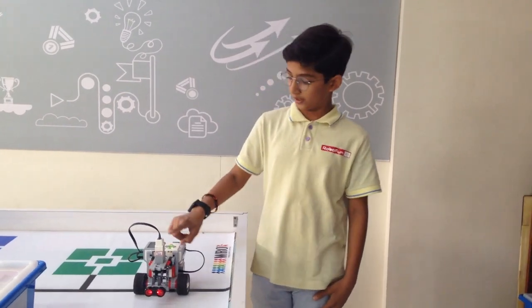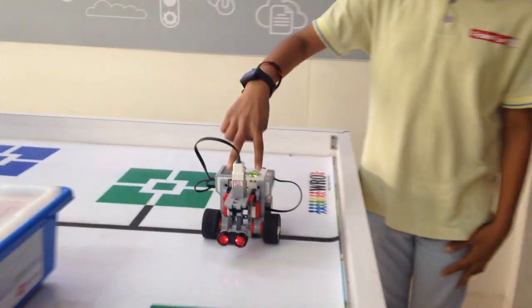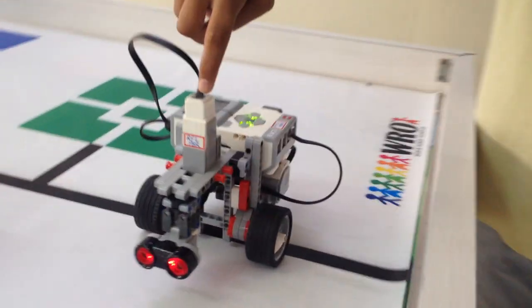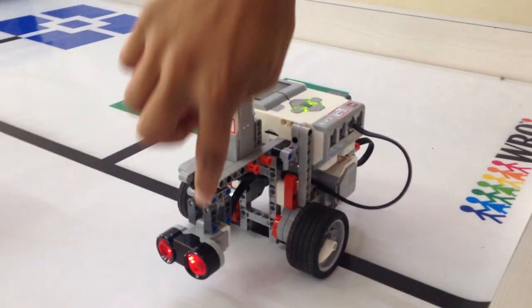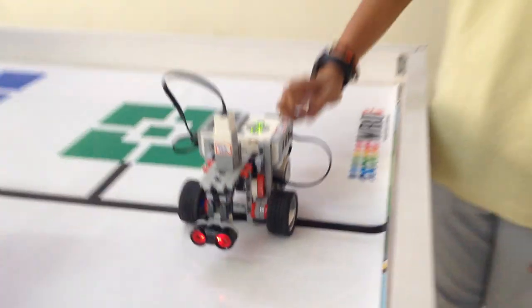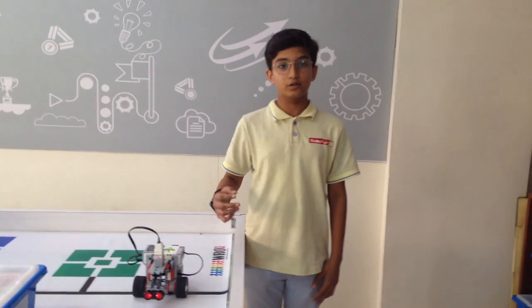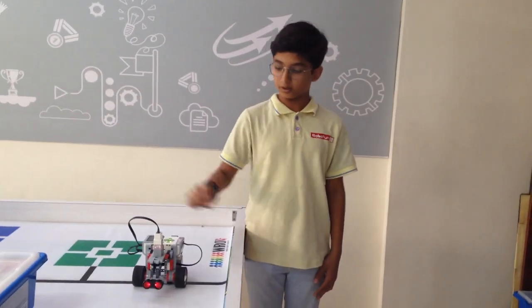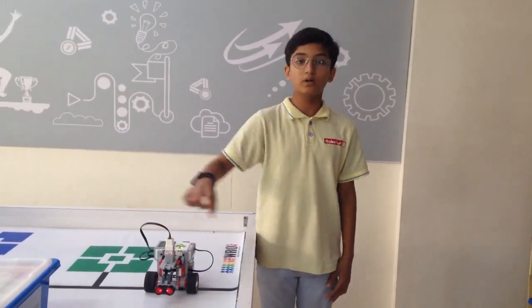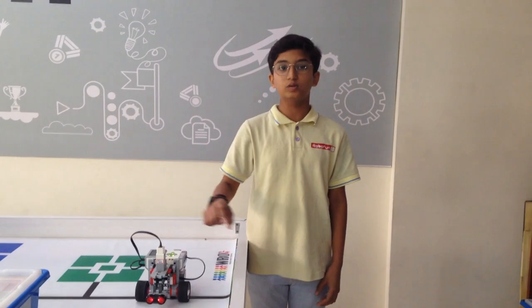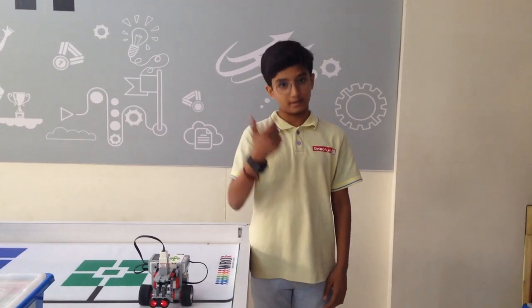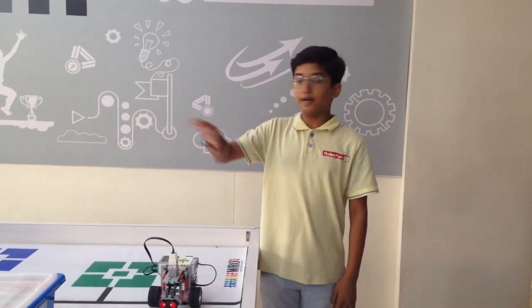I have used one EV fabric, two large motors, one medium motor and one ultrasonic sensor. These two large motors are used to move the robot. This medium motor is used to move the ultrasonic sensor right and left.